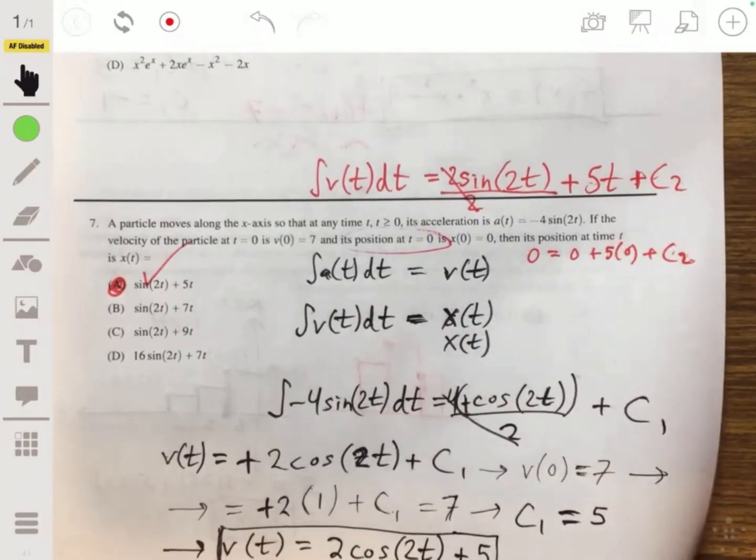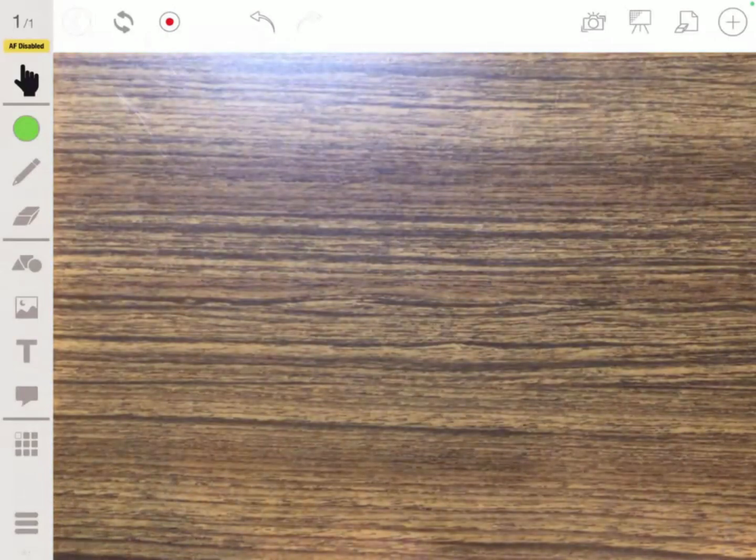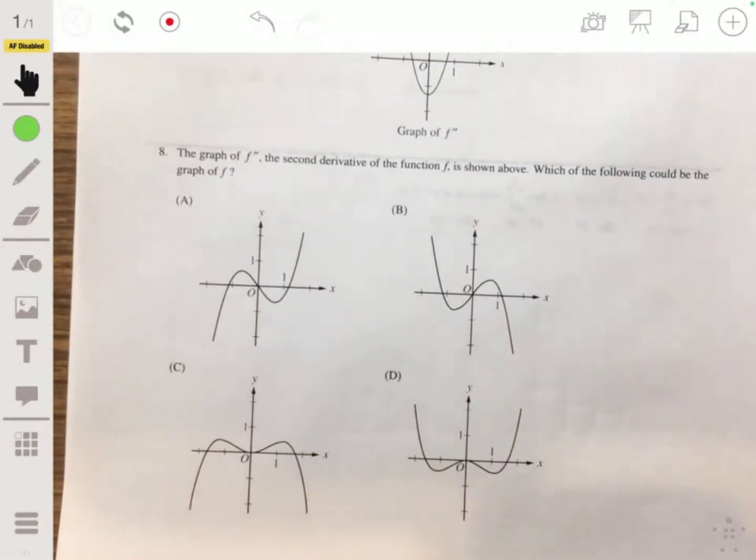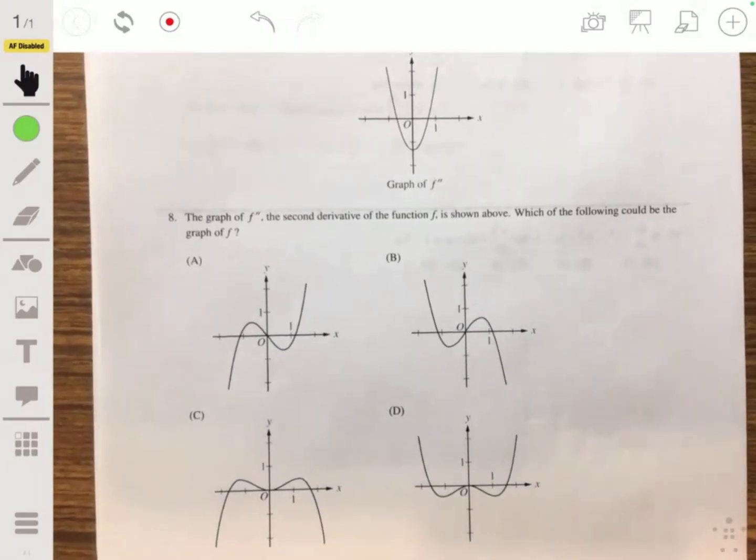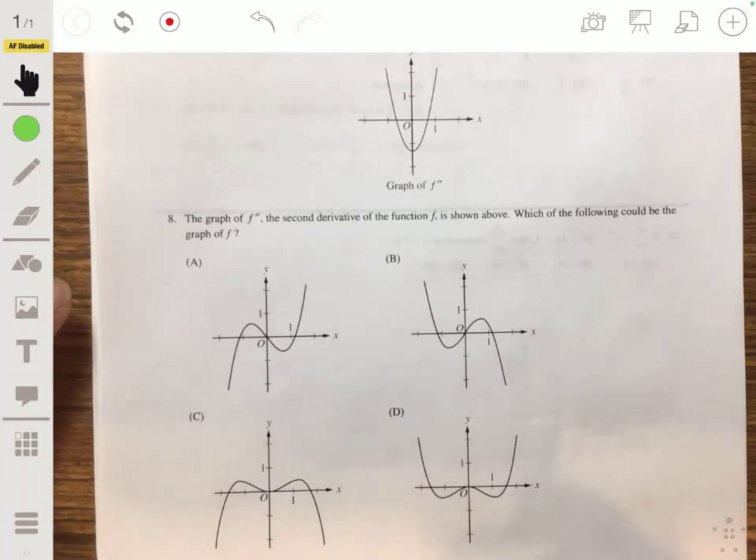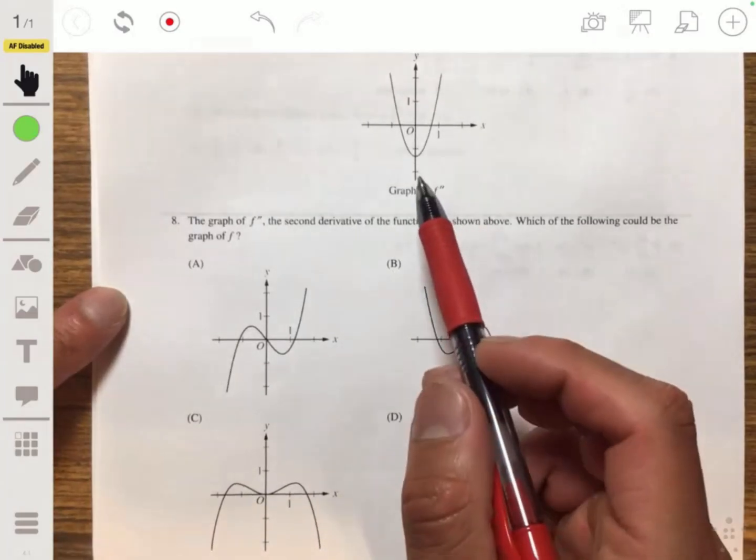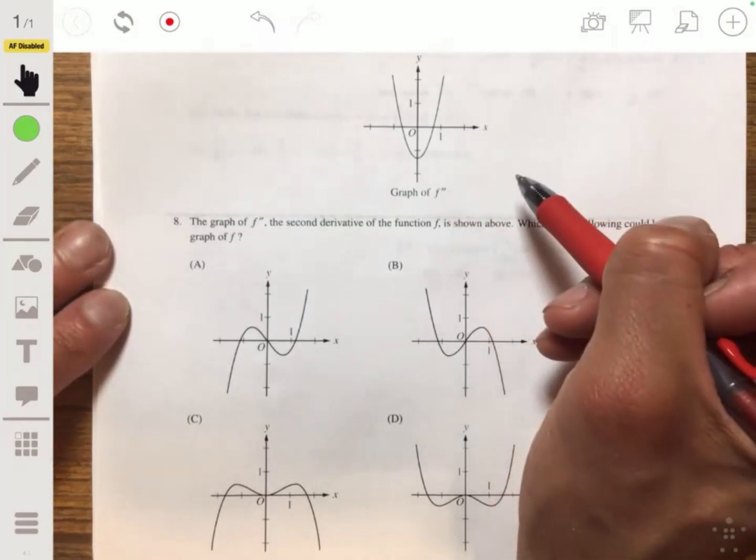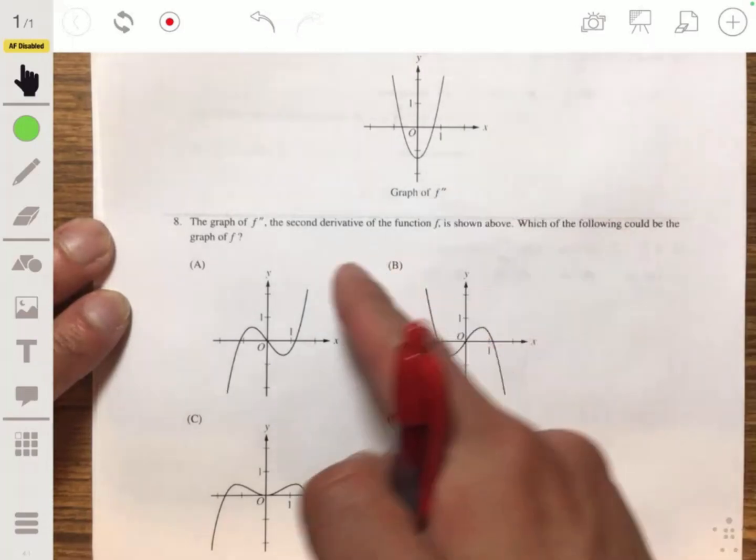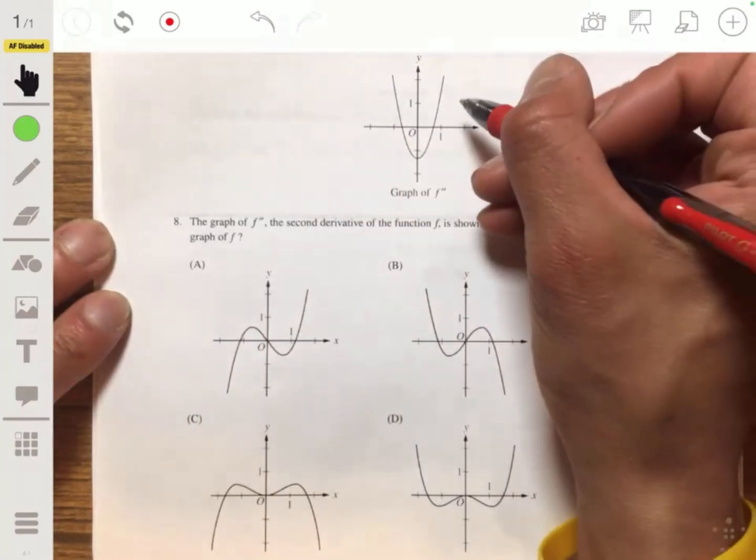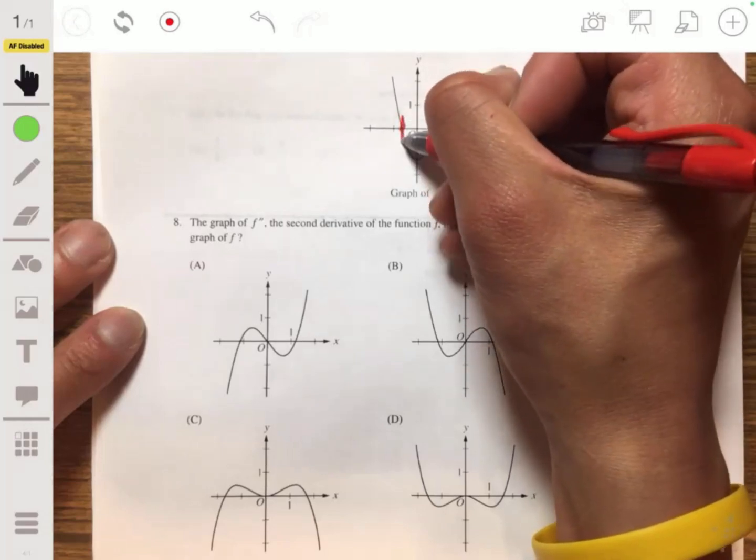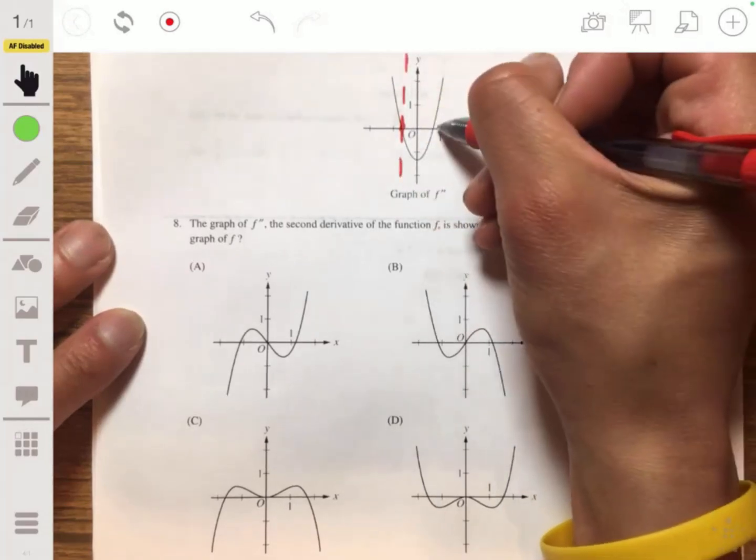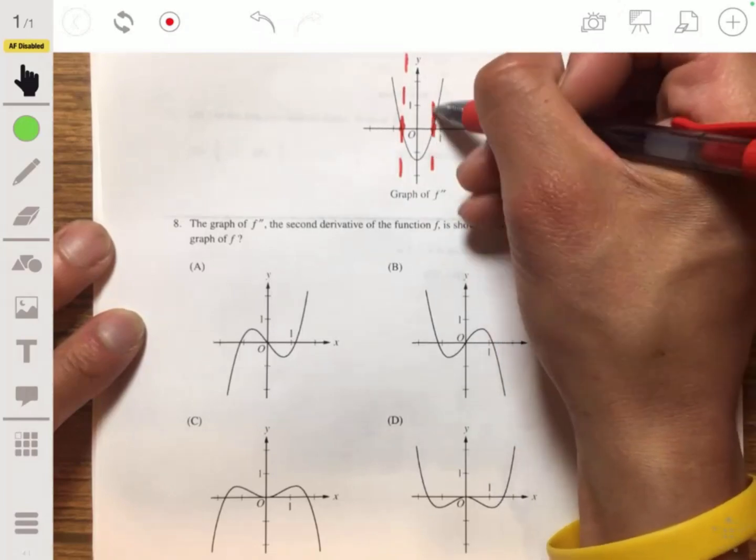Sorry for being so messy on that one. I'm usually better about that. Number eight. I have to zoom out. Okay. So if we're given the second derivative of f, then we need to find the function s. So this is f''. So let's study where the zeros are. That's always the key.